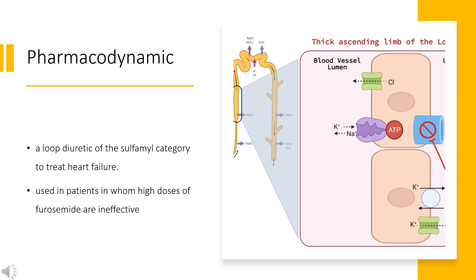In patients with normal renal function, Bumetanide is 40 times more effective than furosemide.